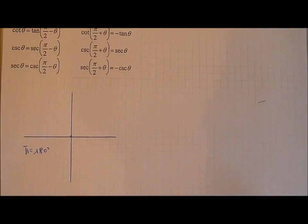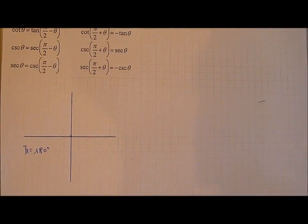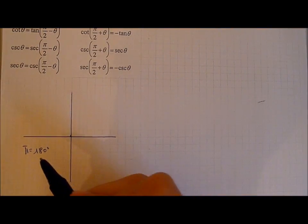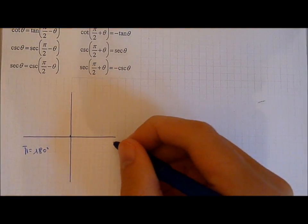In cofunction identities we work with radians. So really all you have to know for radians is that pi is equal to 180 degrees. This means that 360 degrees is equal to 2 pi.